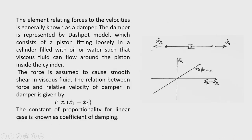The force is assumed to cause smooth shear in the viscous fluid, so the force-velocity relationship is linear: F = c(ẋ1 − ẋ2), where ẋ1 and ẋ2 are velocities at the two ends of the damper. Now let us construct a simple model of an undamped oscillator with mass and spring. The unstressed position of the spring and the static equilibrium position are identified. From the unstressed position, when the load is attached, the static deformation is δ, and vibration takes place due to external loads or initial disturbances; x is measured from the static equilibrium position.